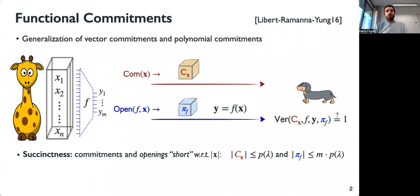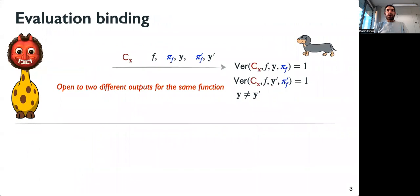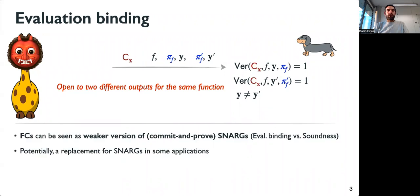The security property of functional commitments is evaluation binding, which informally says you cannot have a malicious sender that, computationally speaking, can open a commitment to two different outputs for the same function.